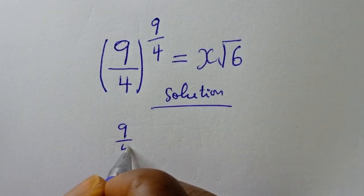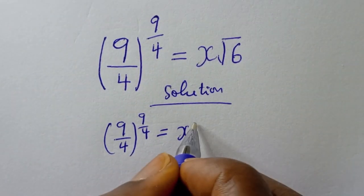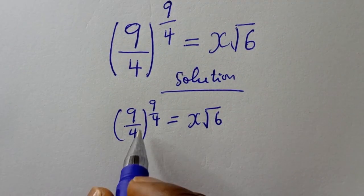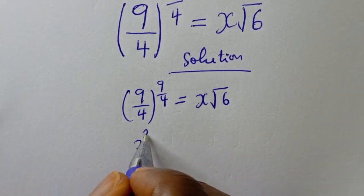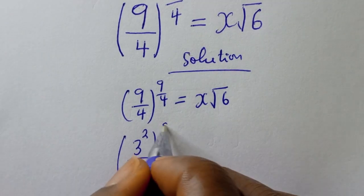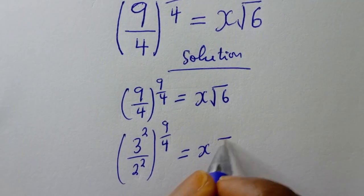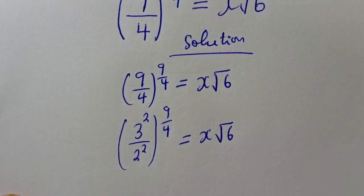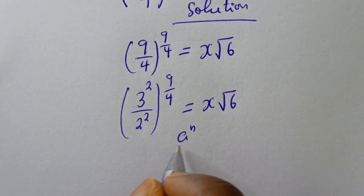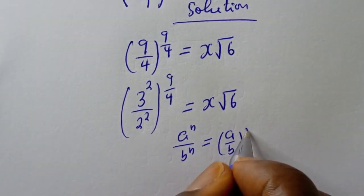9 over 4 to the power of 9 over 4 is equal to x square root of 6. This is 3 squared over 2 squared, to the power of 9 over 4, is equal to x square root of 6. Take note that if you have a raised to power n over b raised to power n, this is equal to a over b to the power of n.